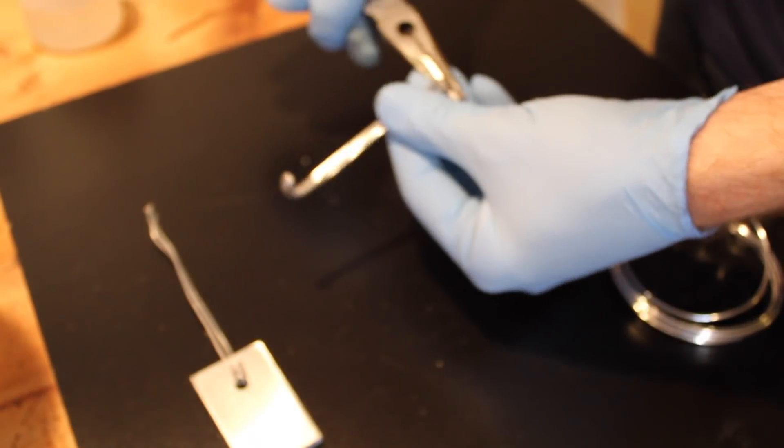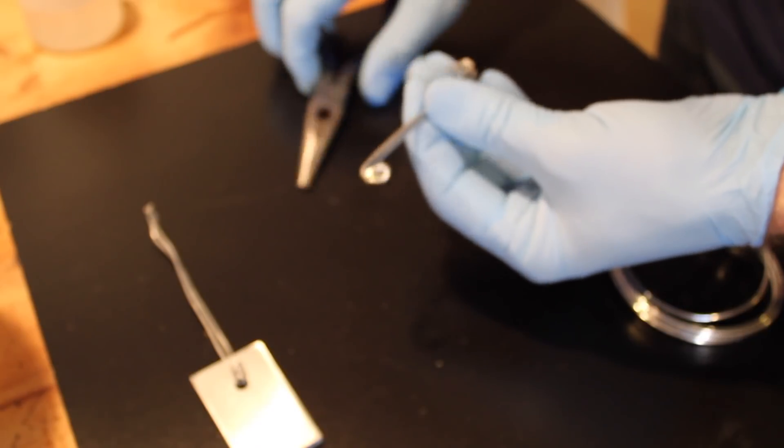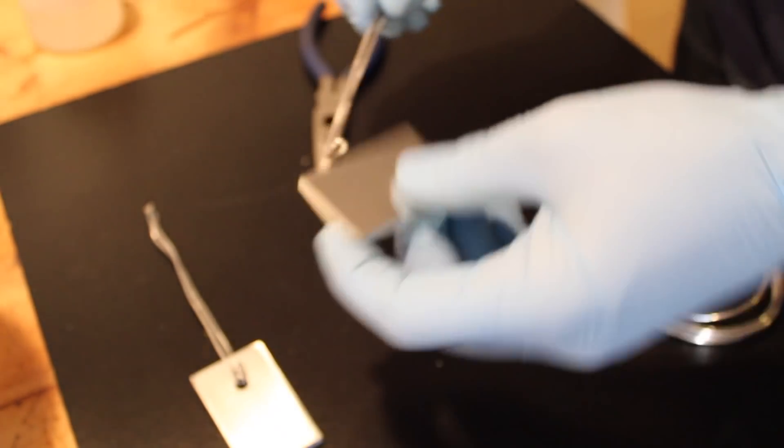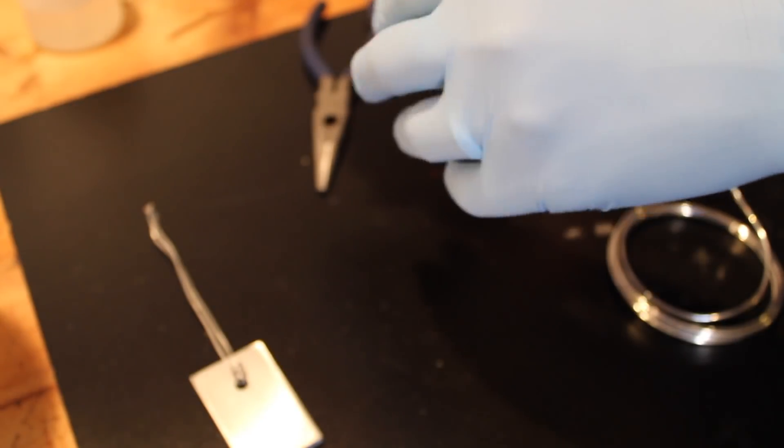When making the long s-shaped hooks be sure that they're long enough that your piece is completely submerged in the etchant and in the anodizing bath.